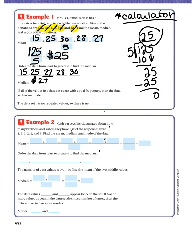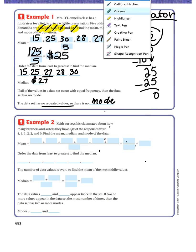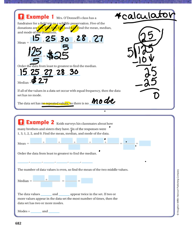If all of the values in the data set occur with equal frequency, then the data set has no mode. This data set has no repeated values, so there is no mode. If you look back up at the data set, all of these numbers, 16, 25, 27, 28, 30, there are absolutely no repeated numbers in the data set. So when there's no repeated numbers, no repeated values, there is no mode.